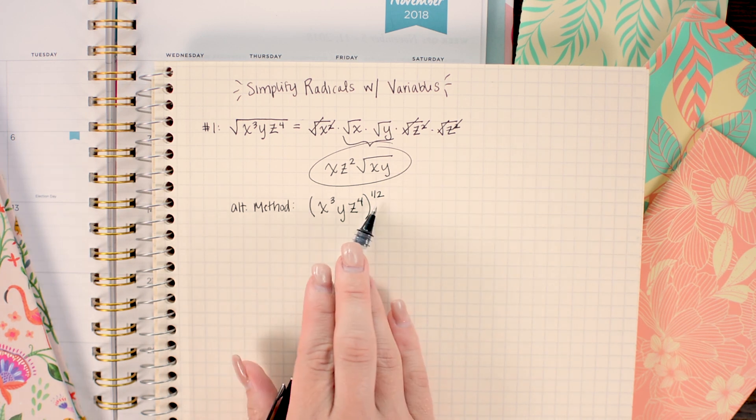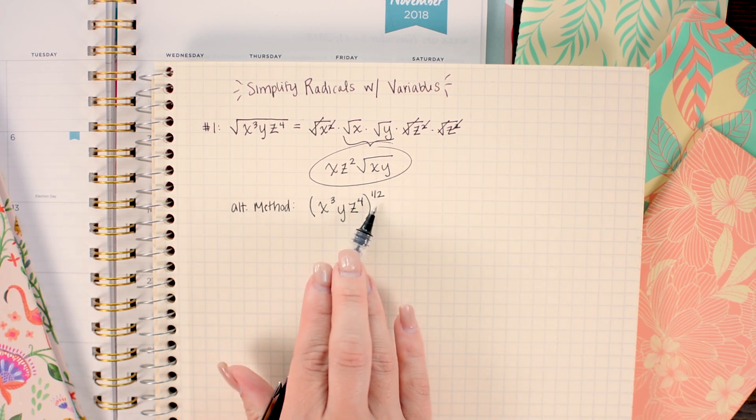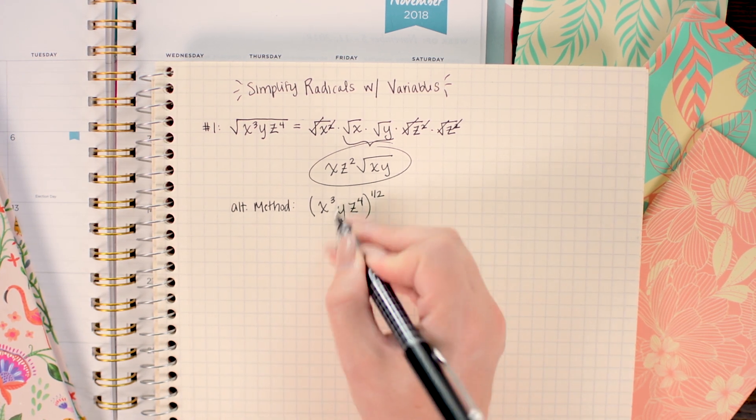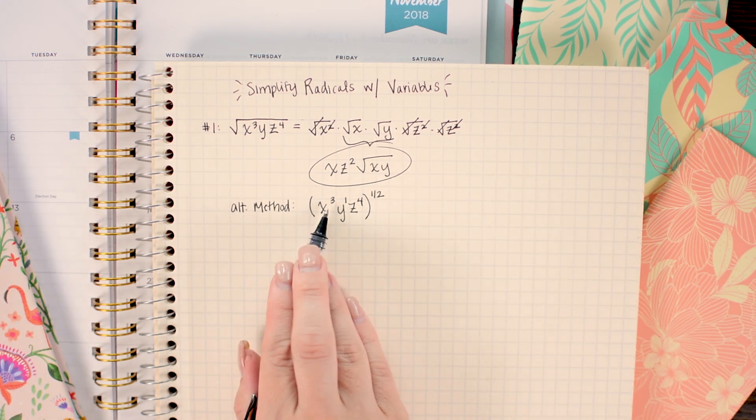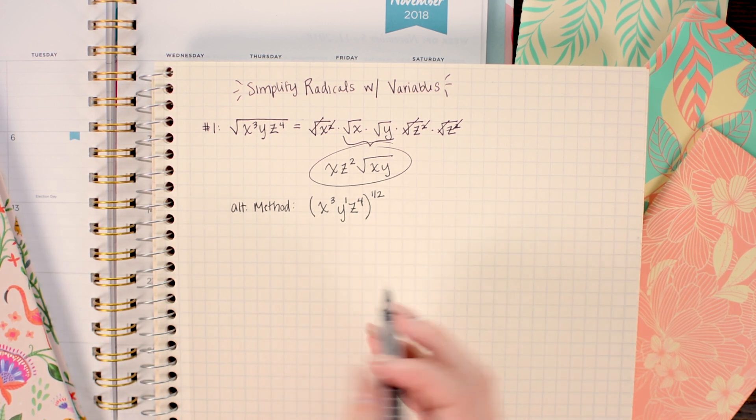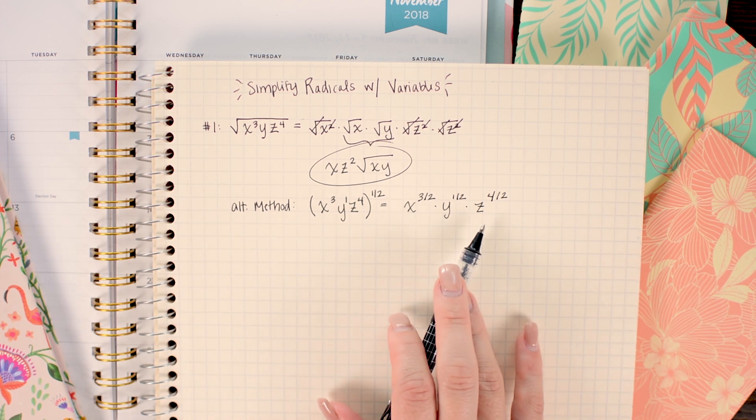Then I'm going to use those exponent rules because I have these variables all being raised to the one-half power so I'm going to multiply. And remember that y there's no number written on this so we can write in a one to just kind of help us. So I'm going to multiply three with one-half, one with one-half, and four with one-half.